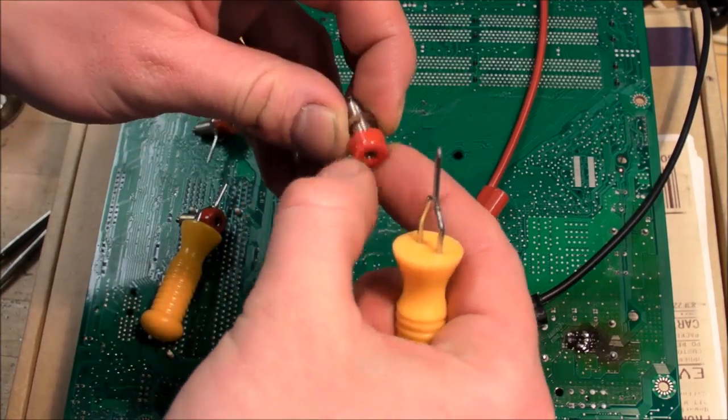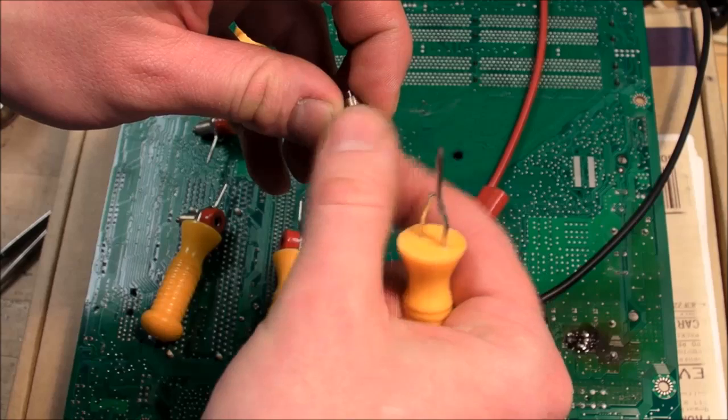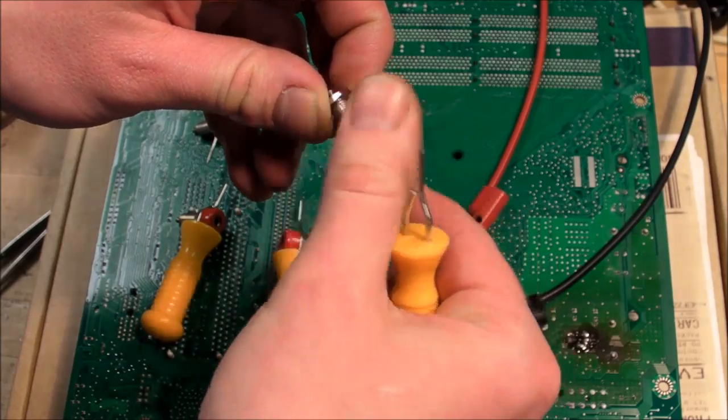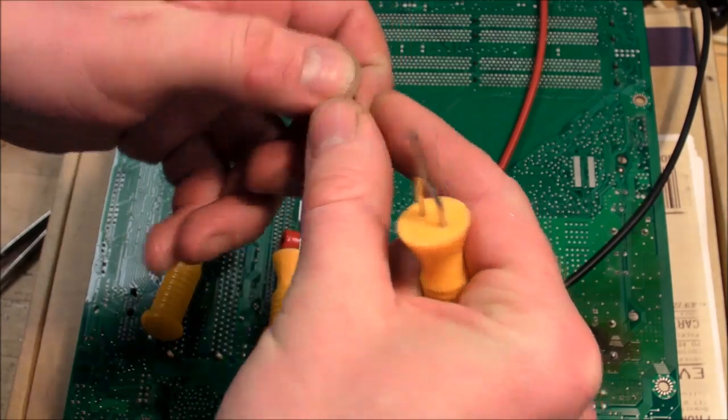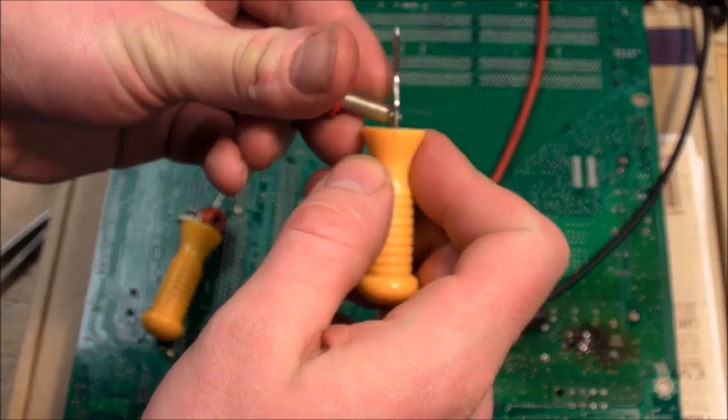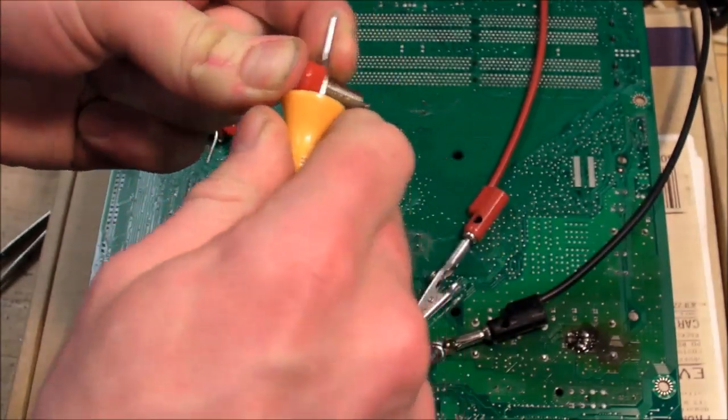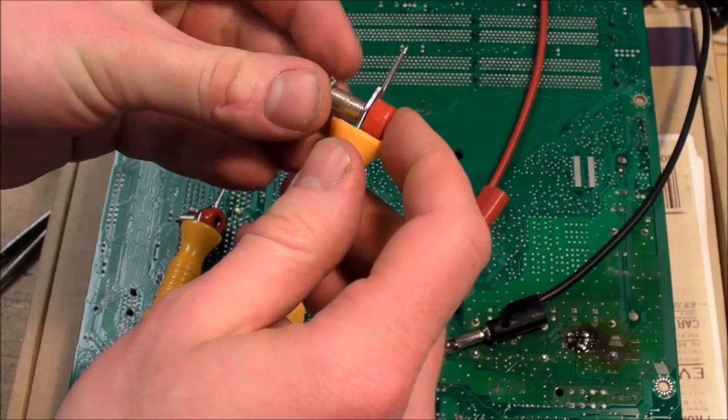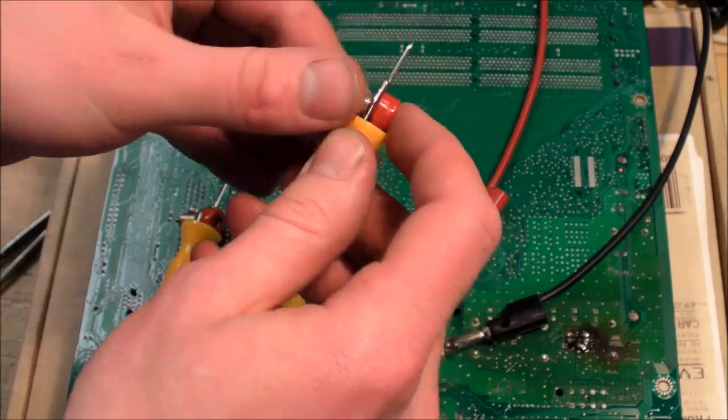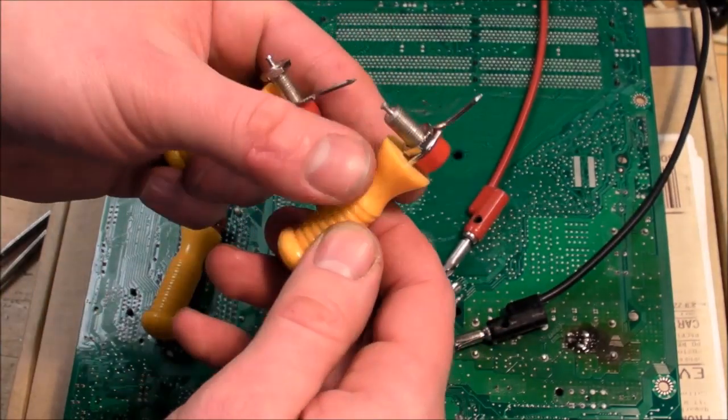And then I got these banana jack female connectors here. Stick that through, and then put the nut on the other side and tighten it down. And I end up with one of these.